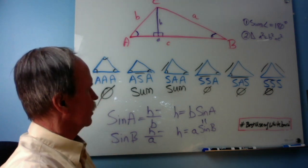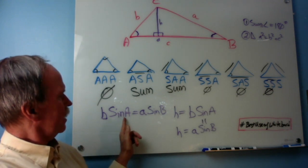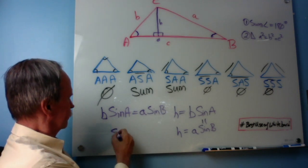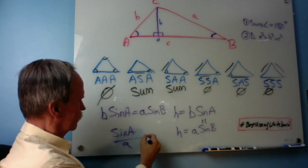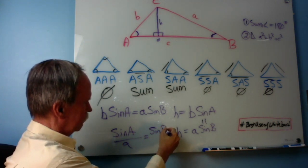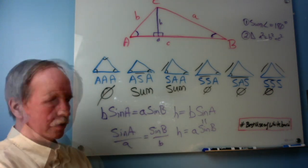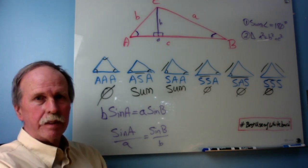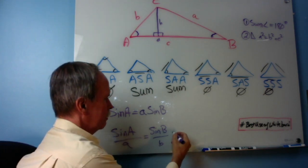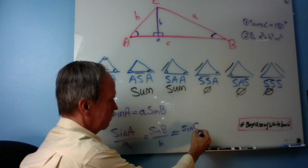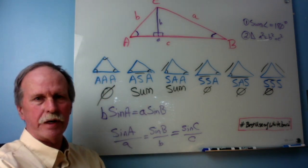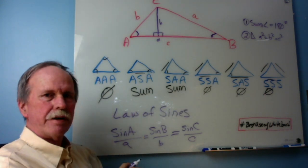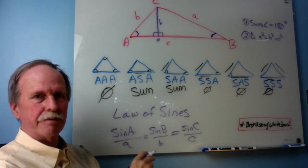So B sine A equals A sine B. Dividing that out gives us: sine A over A equals sine B over B. By doing the same thing, we can also show that sine C over C is also equal to sine A over A and sine B over B. This is called the Law of Sines, and we just derived it. Sometimes you'll see it written as A over sine A equals B over sine B, and so on.